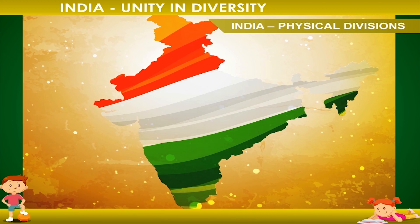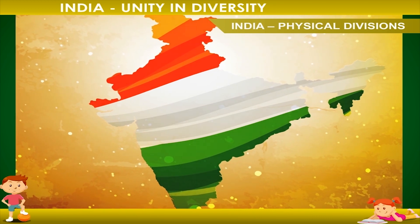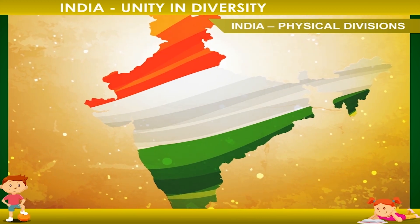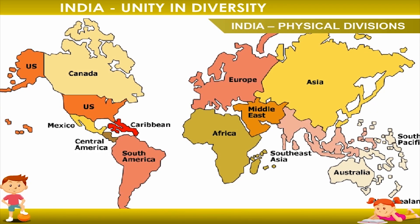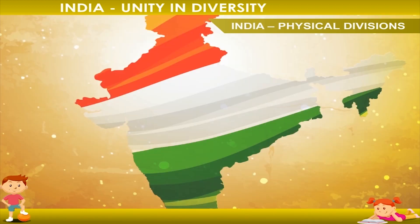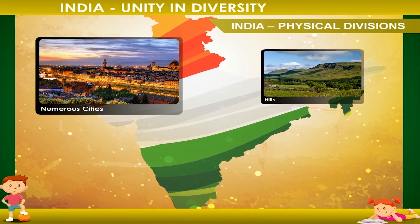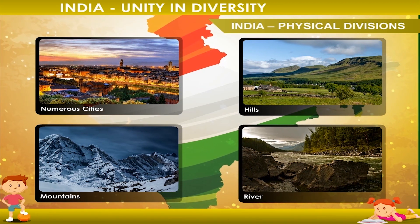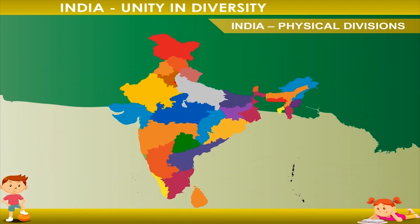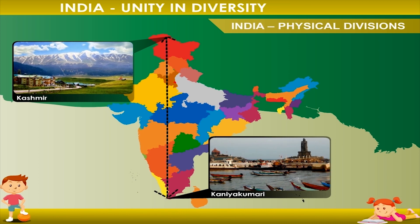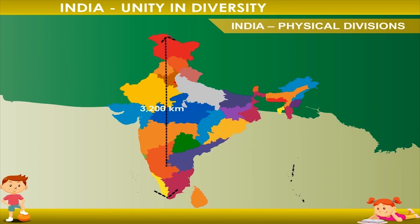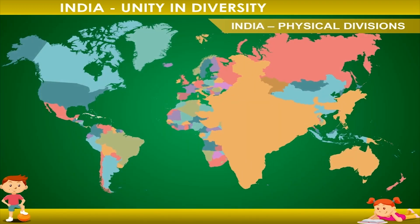India Physical Divisions. India is a big and beautiful country. It is our motherland. India is the seventh largest country in the world. We have numerous cities, hills, mountains and rivers in our country. If we travel from Kashmir to Kanyakumari, we cover a distance of about 3200 km. The widest distance from eastern to western part of the country is about 3000 km.